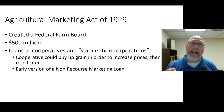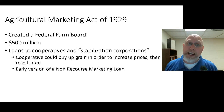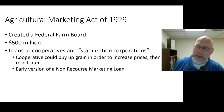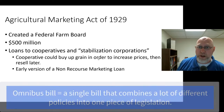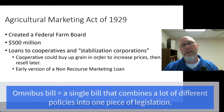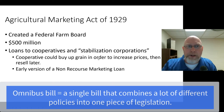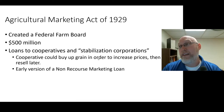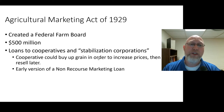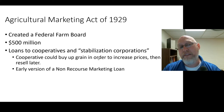The first legislation to get passed was the Agricultural Marketing Act of 1929. It wasn't technically the first farm bill because it wasn't a giant piece of omnibus legislation — that's the buzzword here. But here's what the Agricultural Marketing Act of 1929 did: it created this thing called a Federal Farm Board.